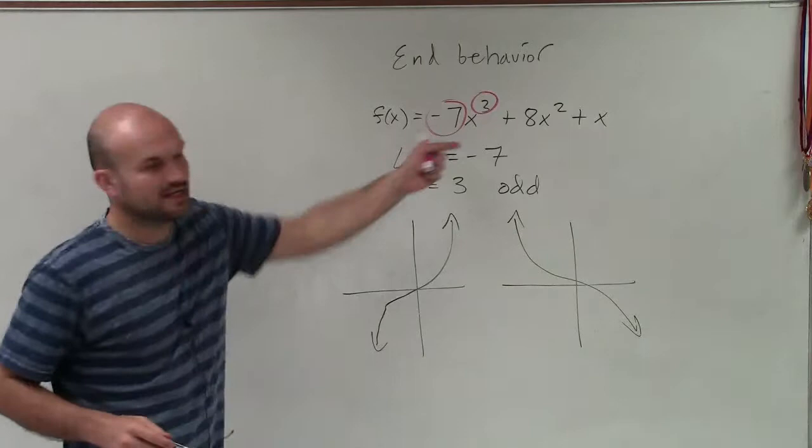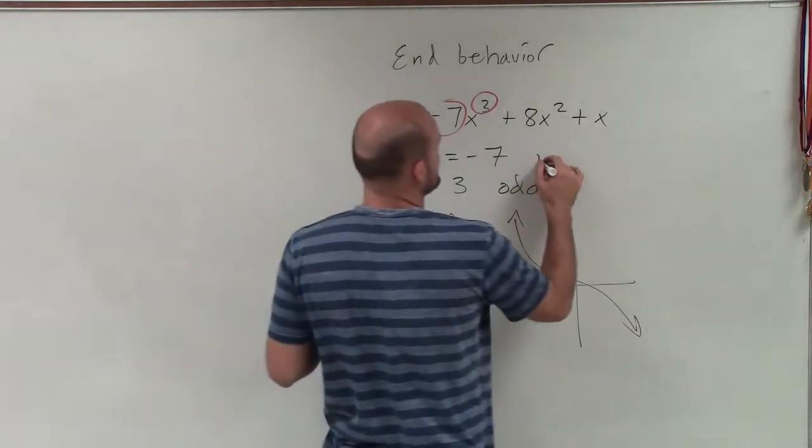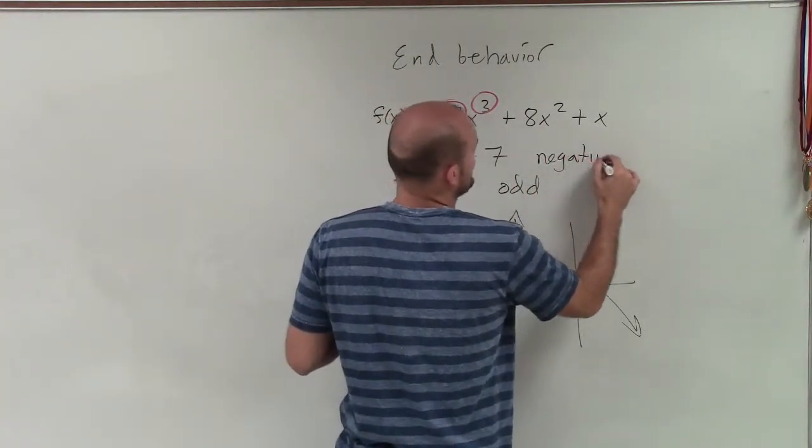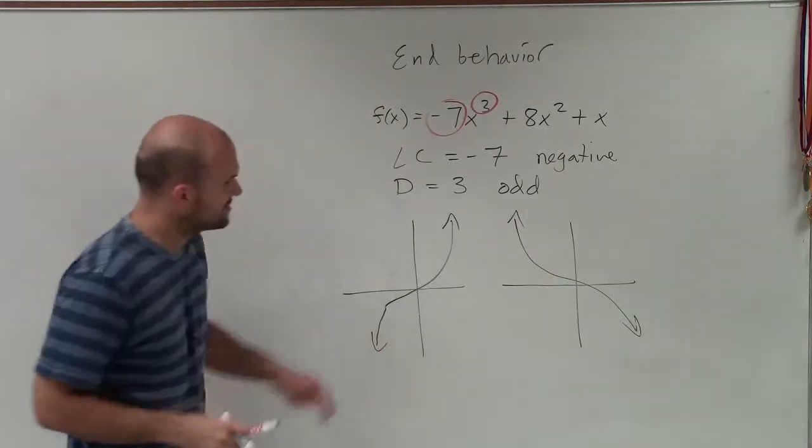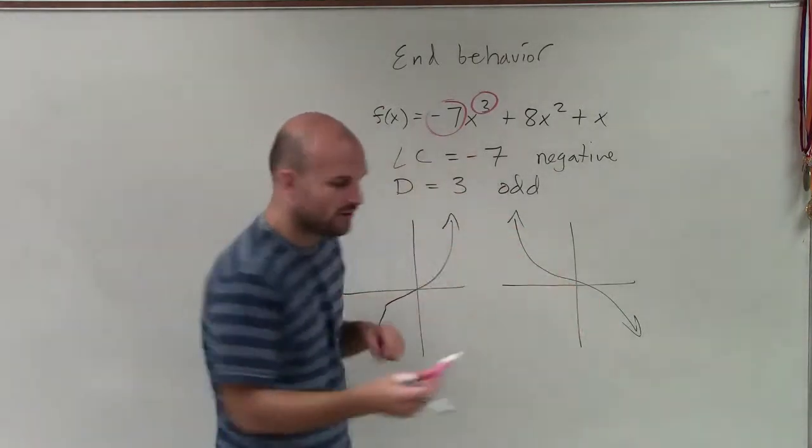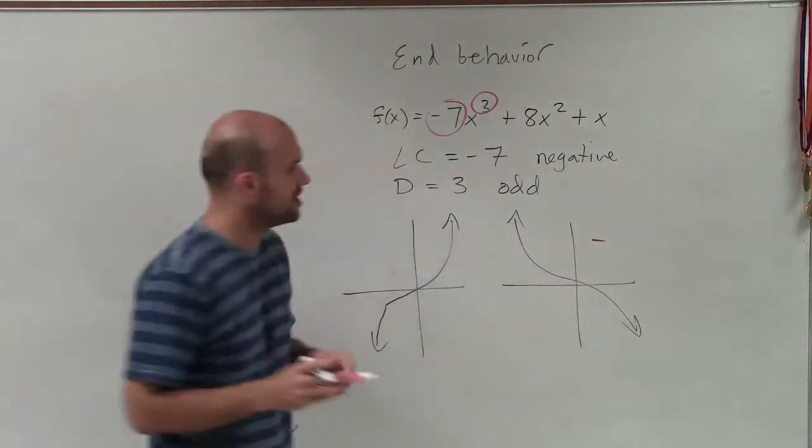But then we look at our leading coefficient, and we know that that is negative. So since that's negative, we know that it has to rise left and fall right, as this is the end behavior of a negative function.